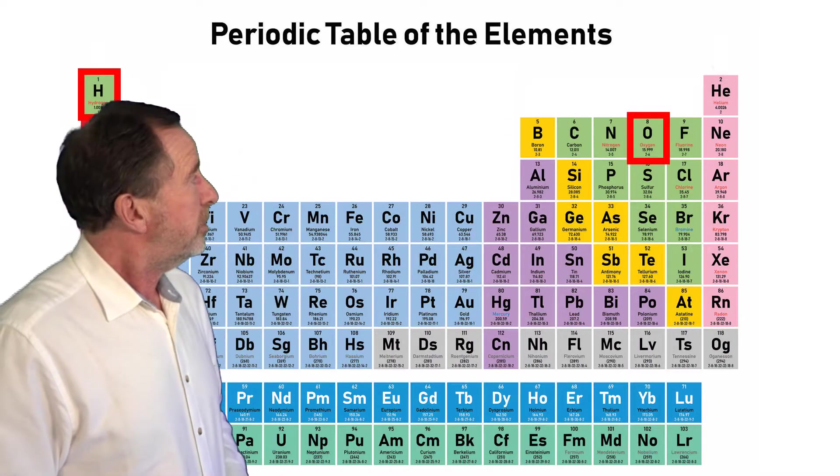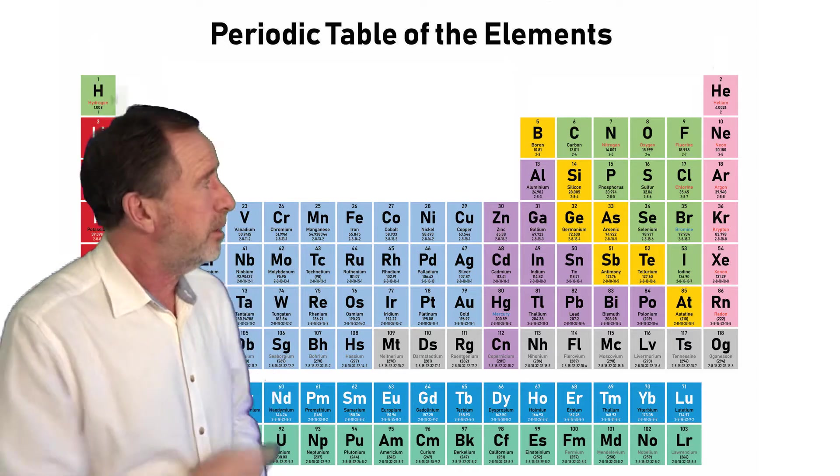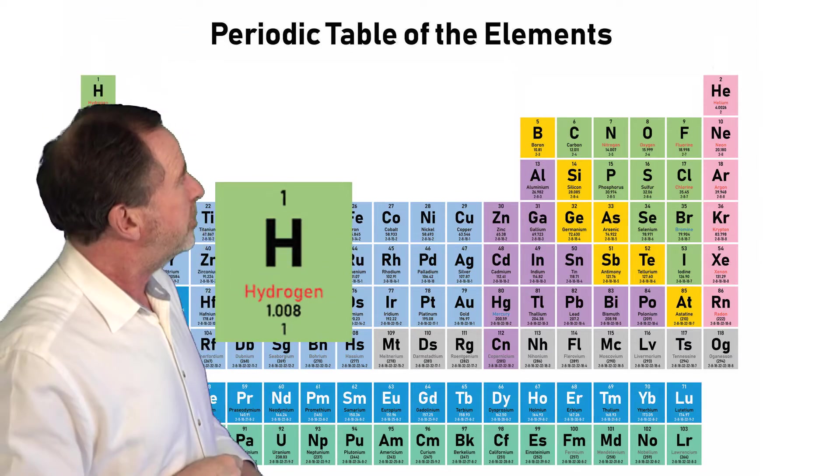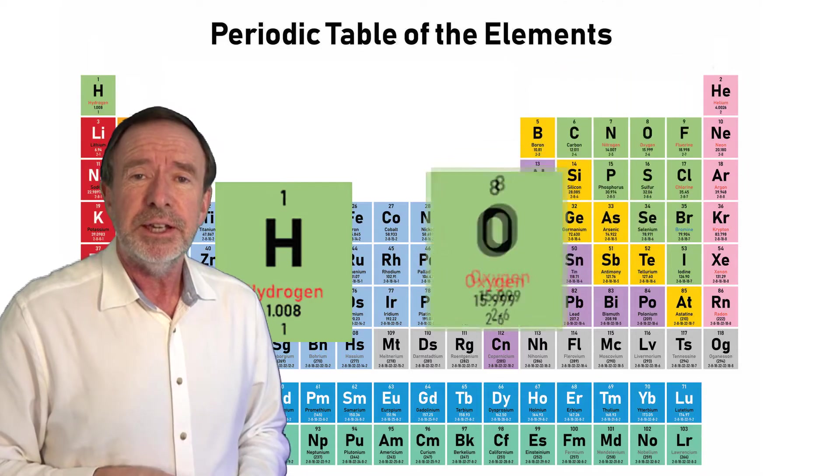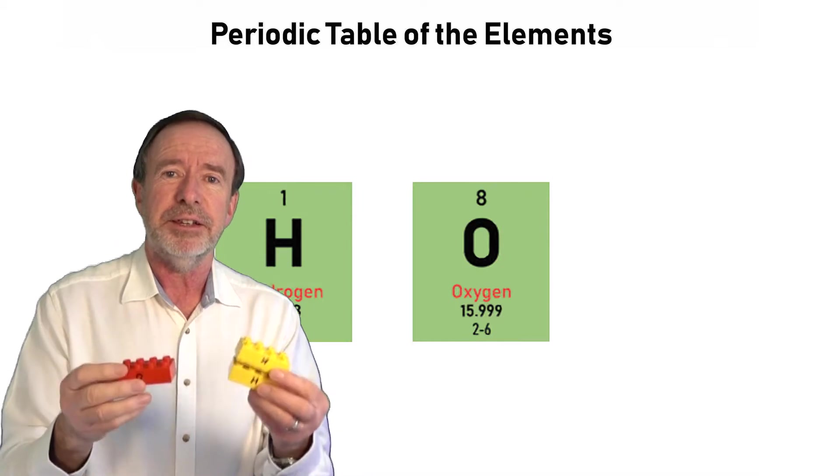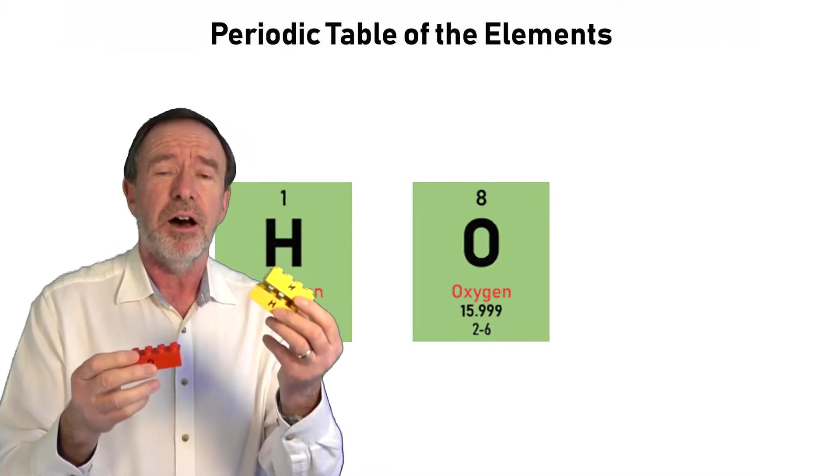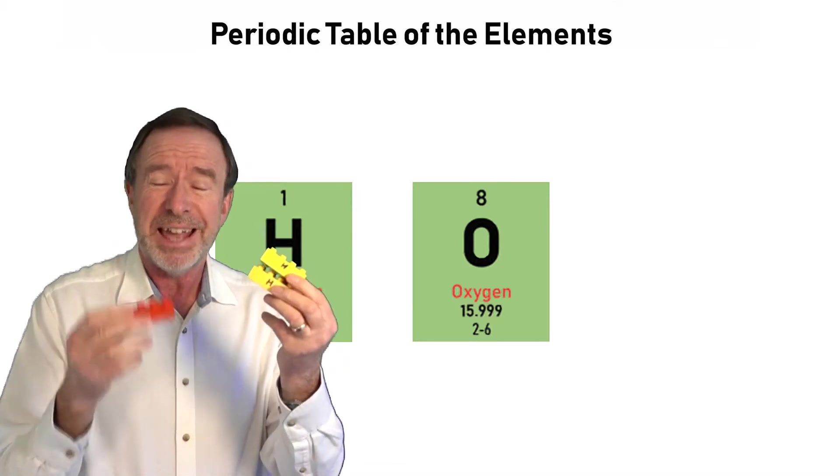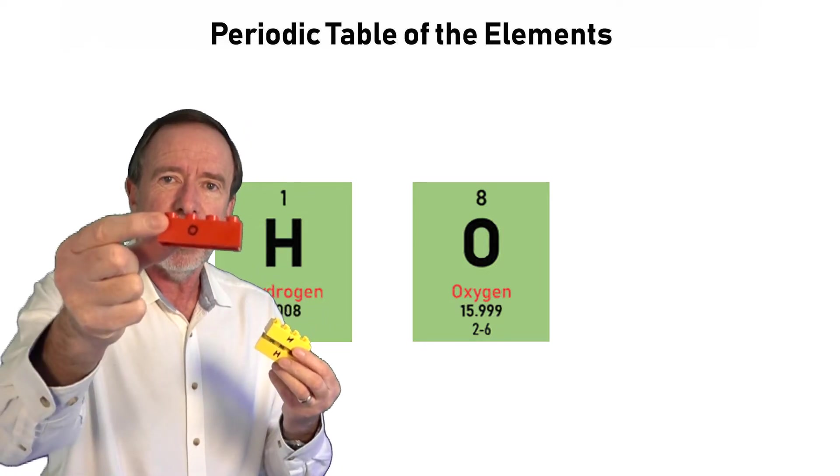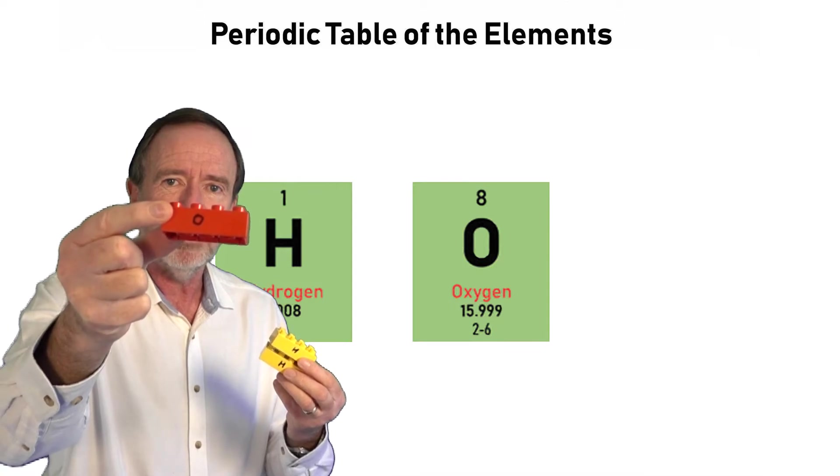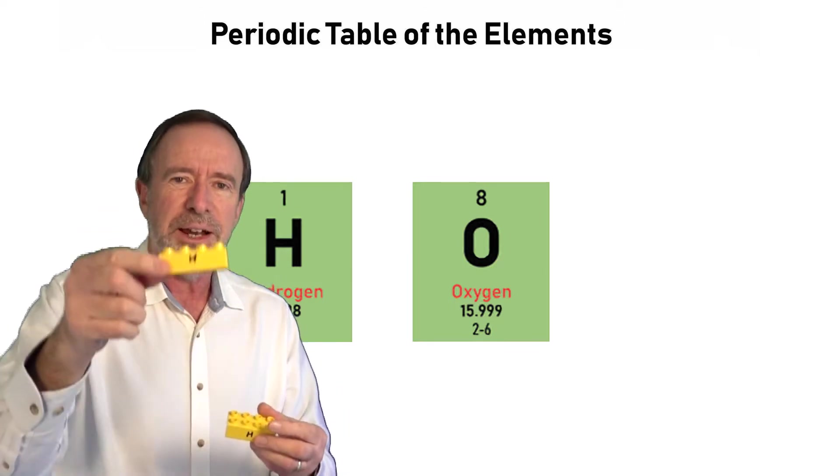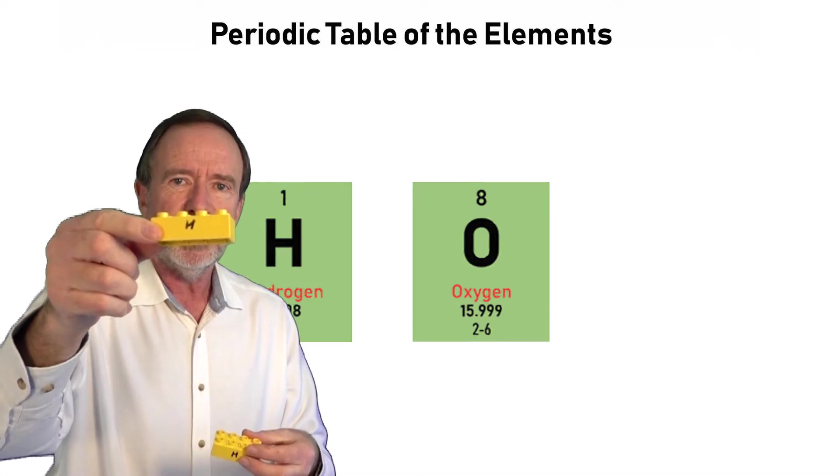So you can see from the periodic table that the symbol for hydrogen is the letter H and the symbol for oxygen is the letter O. And what I'm going to do is pretend that these Duplo blocks are the elements, the atoms of hydrogen and oxygen. So you see I've put a little O onto the red one. So that is an atom of oxygen. And I've put a little H onto these yellow ones. So the yellow blocks are the atoms of hydrogen.